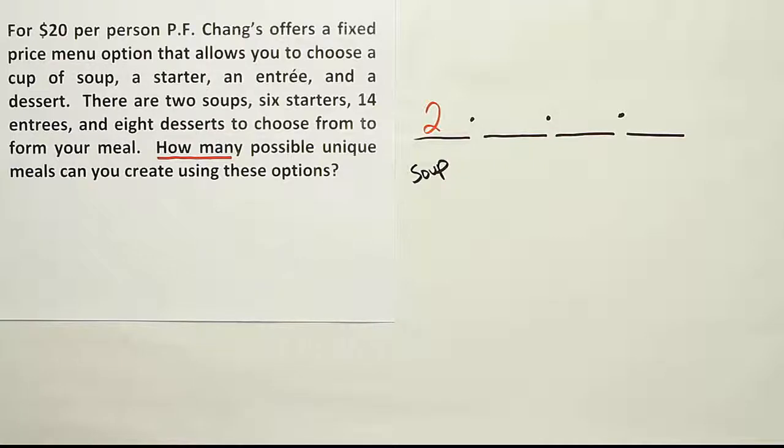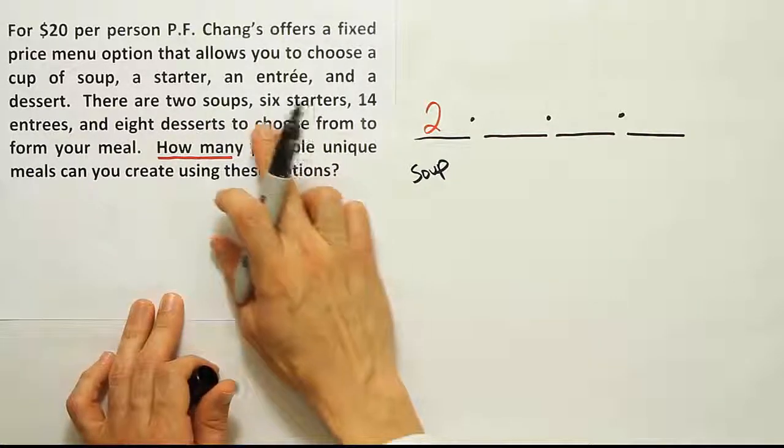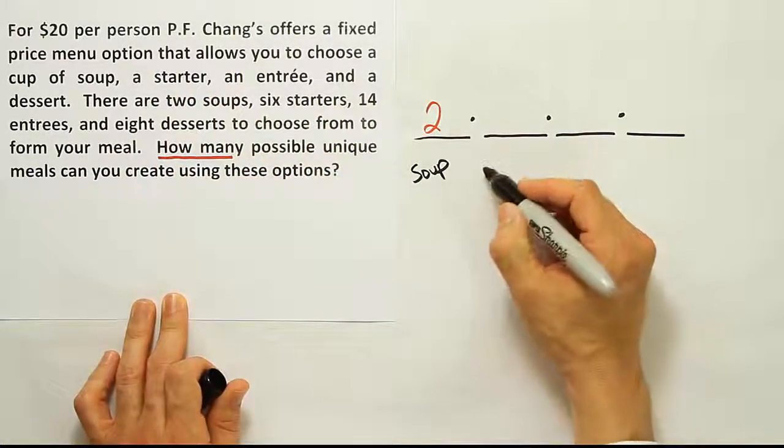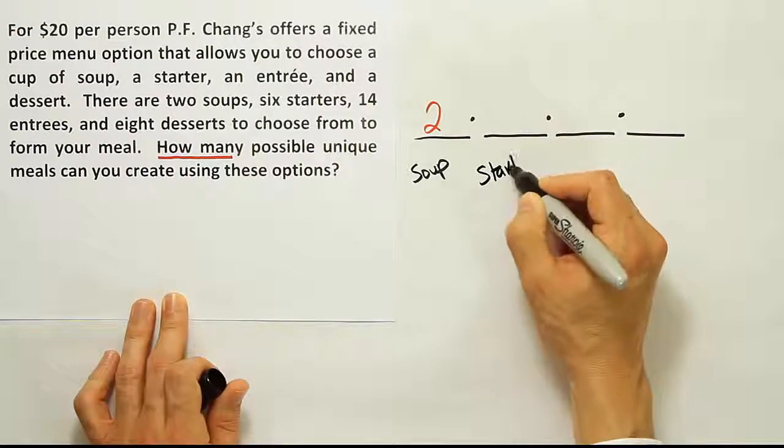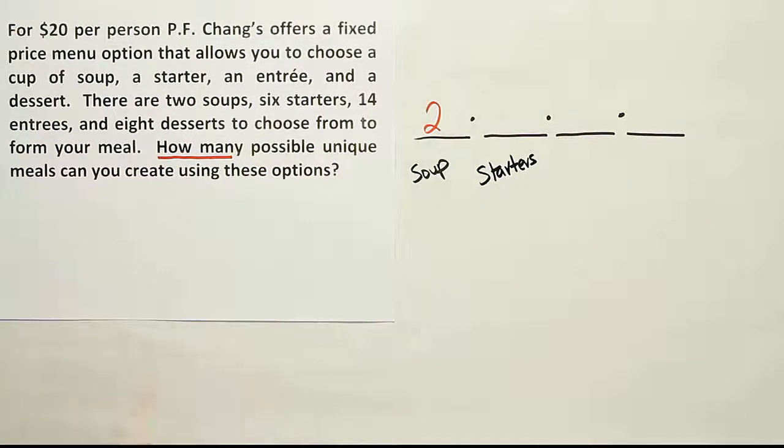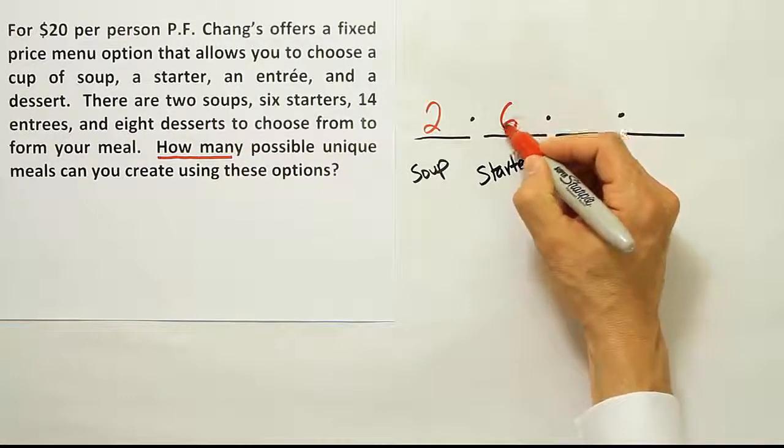Then the next thing we want to look at is how many starters are there. It says there are six starters. So for the starters or the appetizers, we have six different options.